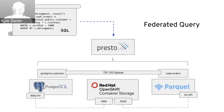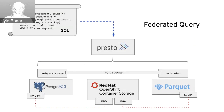Here's a high-level diagram of what we're going to show in this demo. We have a SQL query that will join data from the TPC-DS dataset — specifically the orders table and the customer table. The customer table and many other tables are stored in a Postgres database sitting on top of a RWO PV provided by the RADOS block device from OpenShift Container Storage. The orders table is stored as Parquet files inside the Ceph object store and will be accessed by the Hive connector over the S3 API, talking to the Ceph RADOS Gateway.